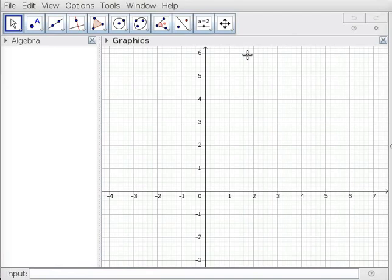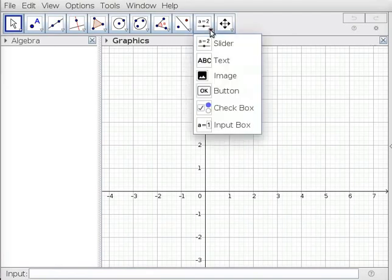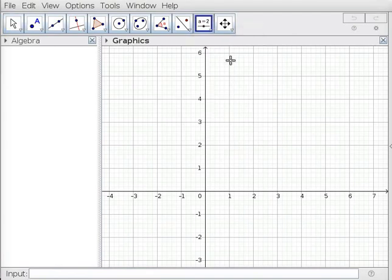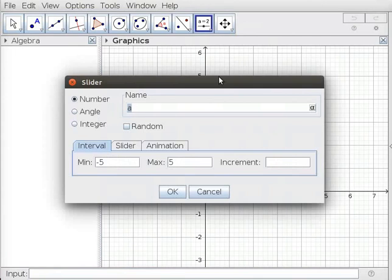Click on slider tool and then in graphics view. Slider dialog box appears. By default, number radio button is selected. In the name field, type a.